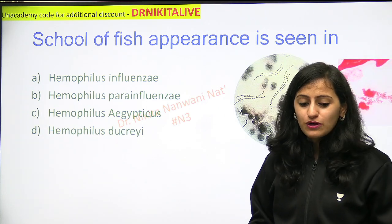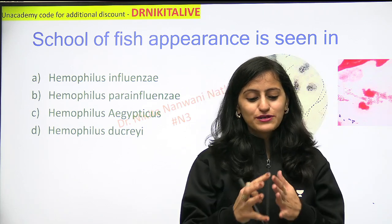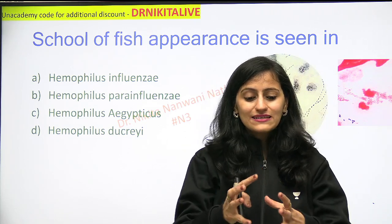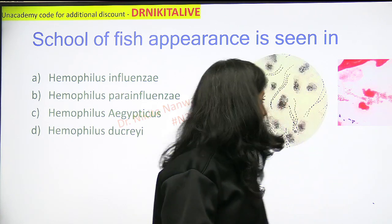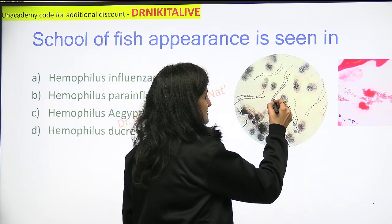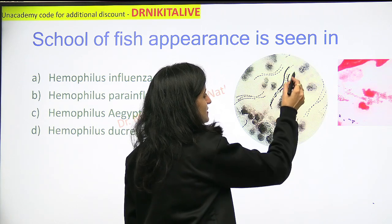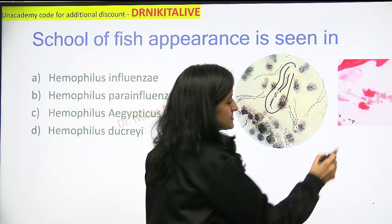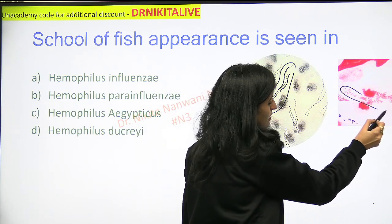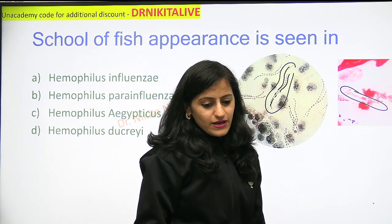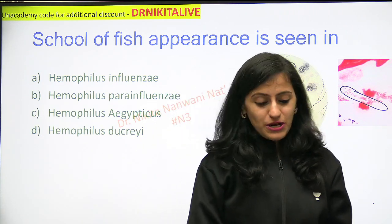How does school of fish appear? School of fish is like fish going to school, or going in line. It is also called railroad or tram track appearance. So as you see here, the organisms are arranged in line one after the other — that is the school of fish appearance. Similarly, these organisms here are arranged in a line — that is the school of fish appearance.